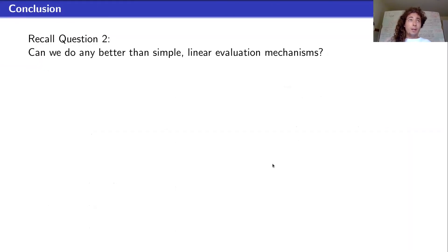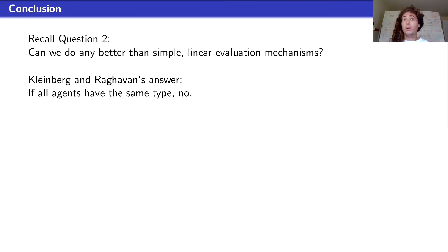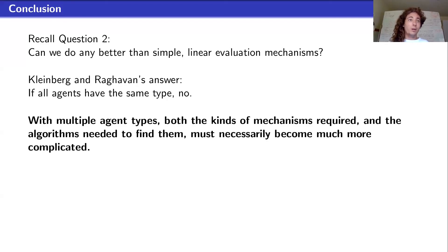Wrapping up, I want to return to question two: can we do any better than simple linear evaluation mechanisms? If you believe Kleinberg and Raghavan, their main answer is: if all agents have the same type, no — the things we do in practice in real courses are actually optimal, and you're not restricting yourself by only using linear evaluation mechanisms. But our paper says that with multiple agent types, both the kinds of mechanisms required and the algorithms needed to find them must necessarily become much more complicated. That is the main takeaway of this paper.